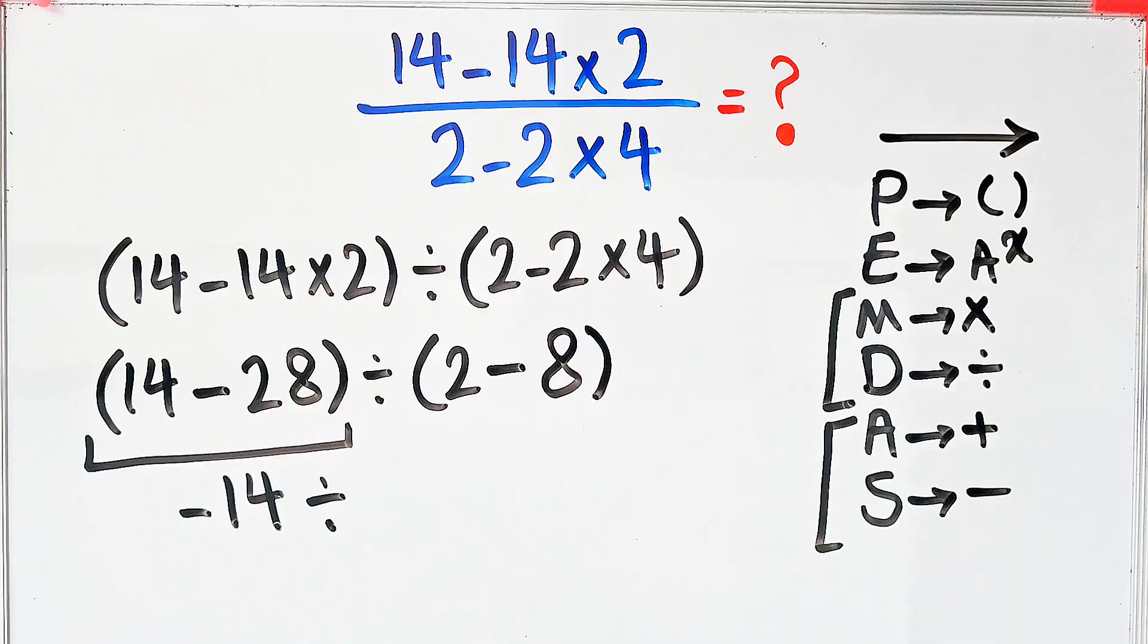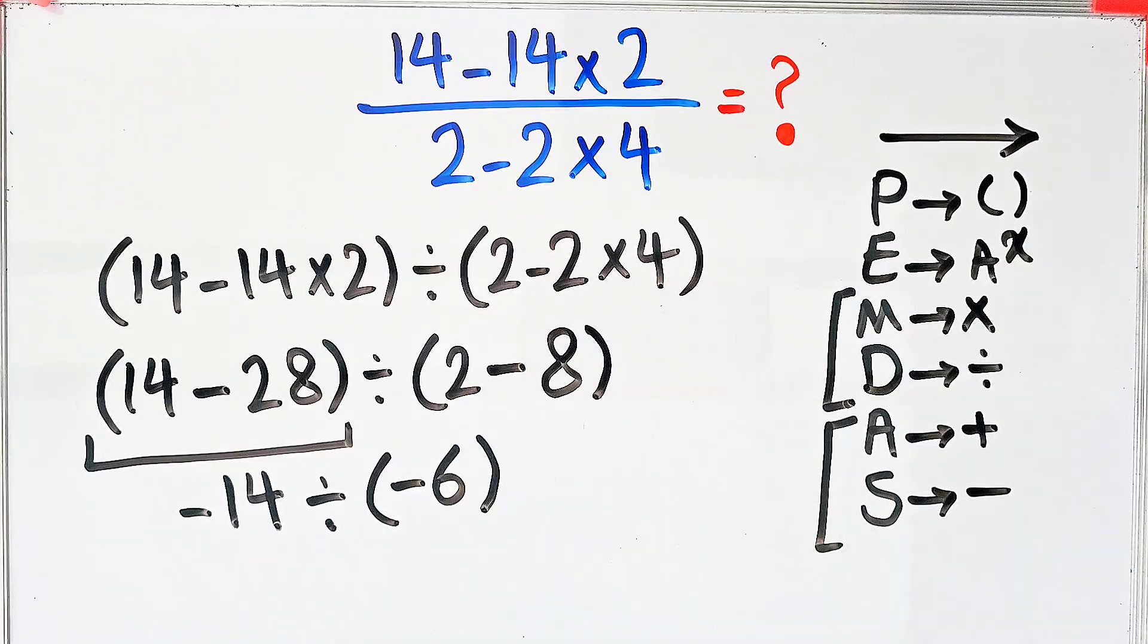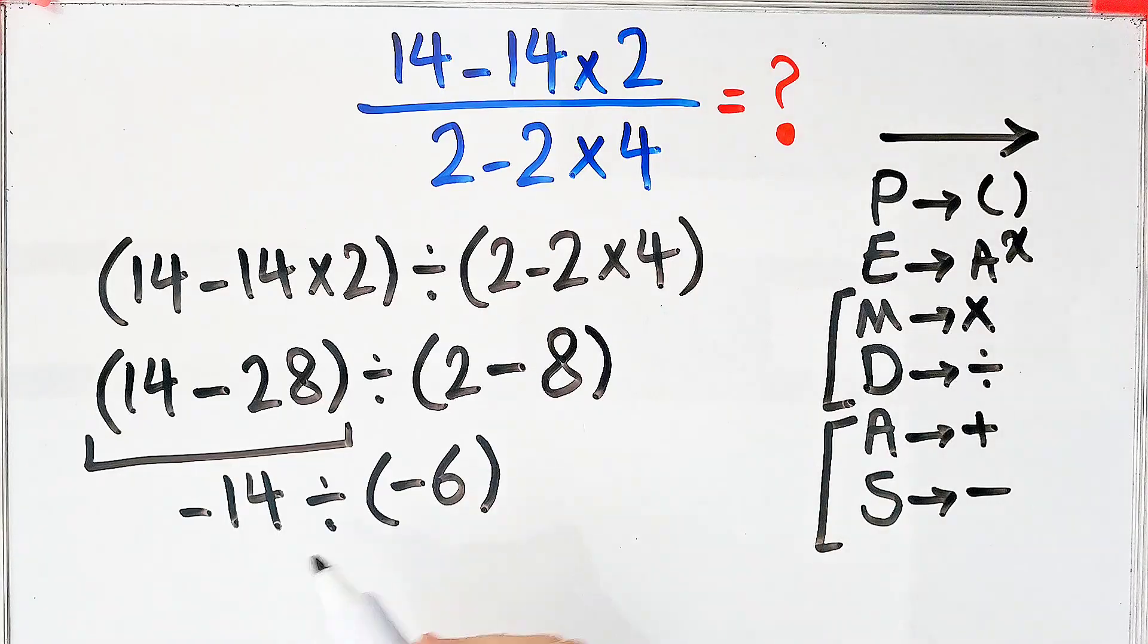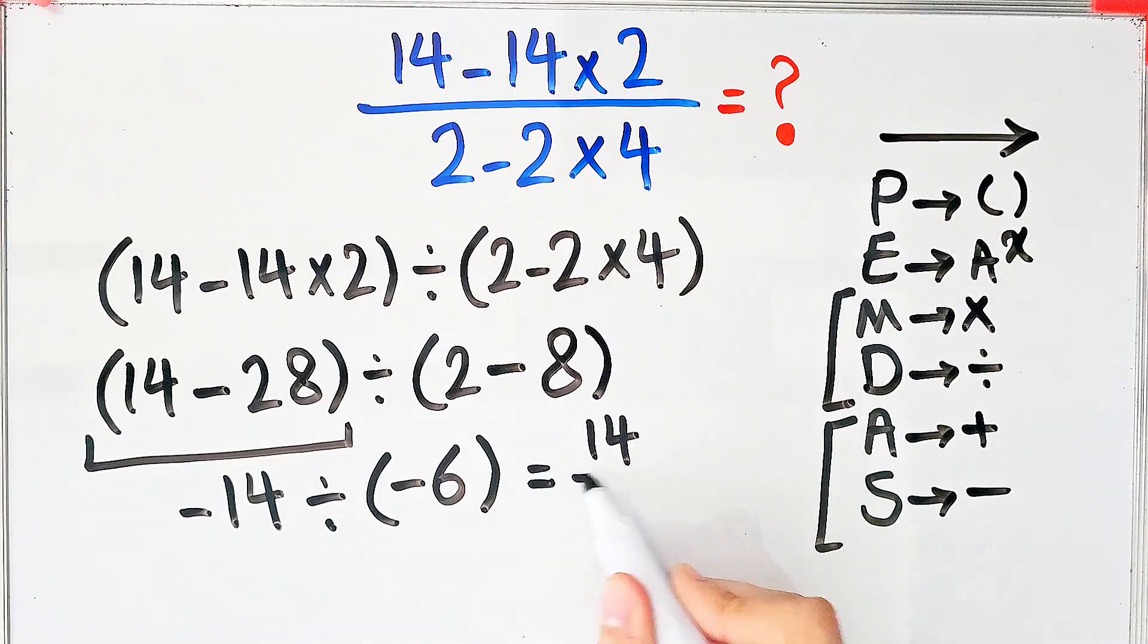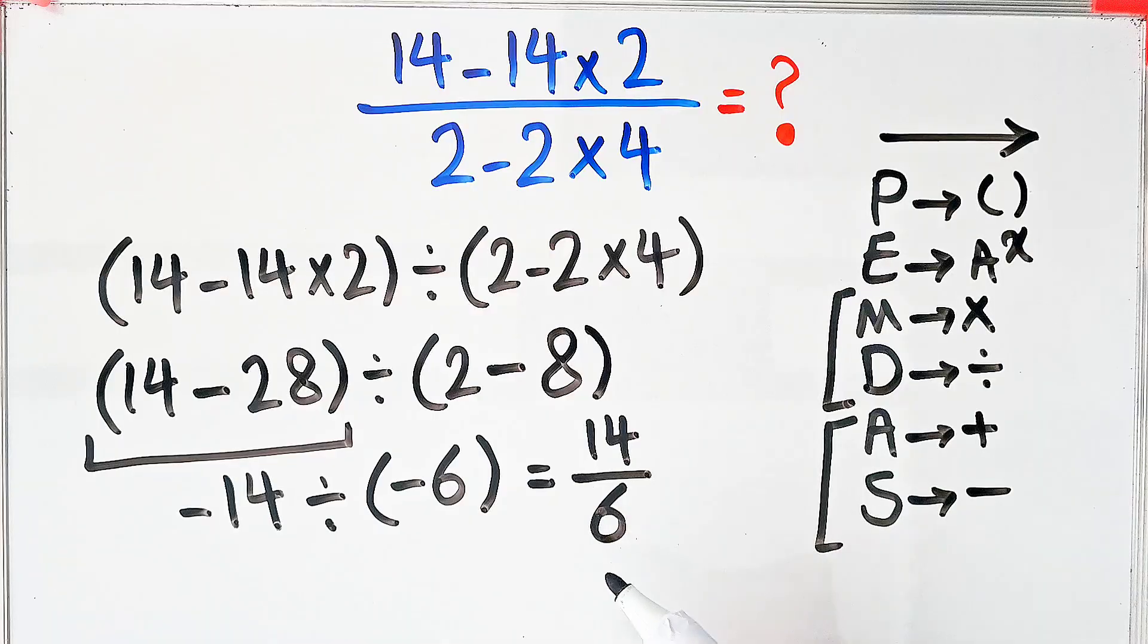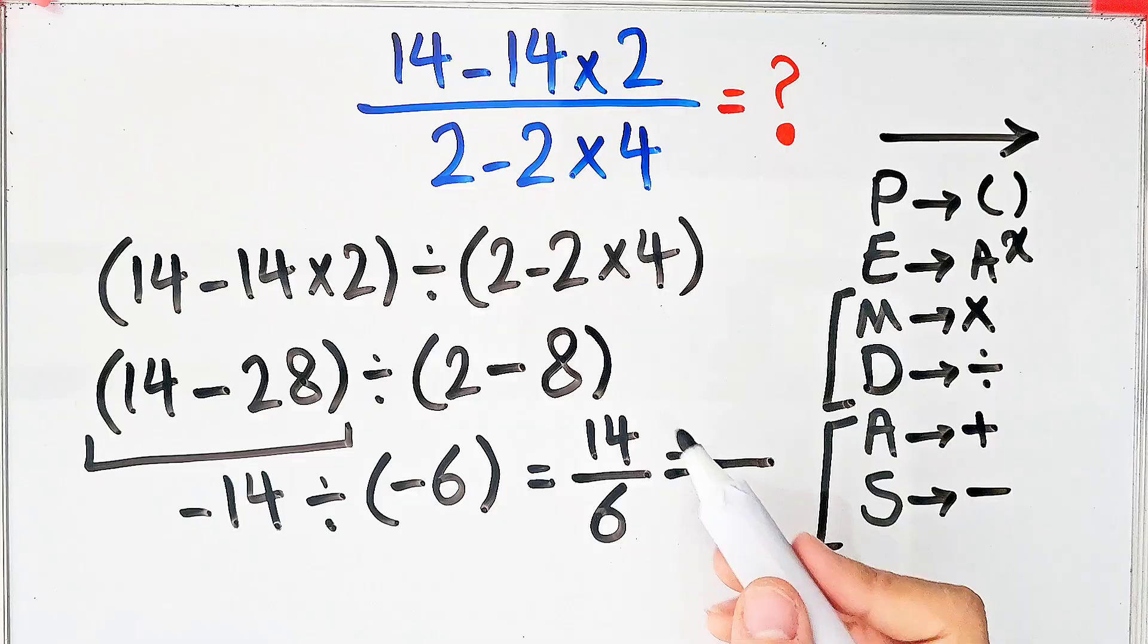And the final answer of this question equals 14 over 6. Because the numerator and denominator of this fraction are divisible by 2, we divided both by 2. The final answer of this question equals 7 over 3.